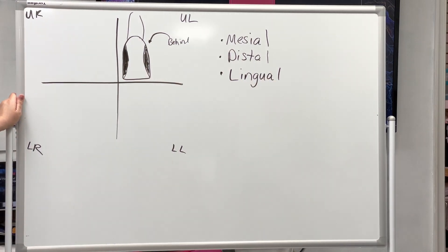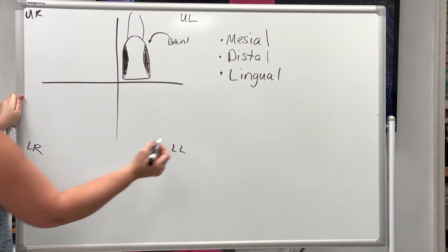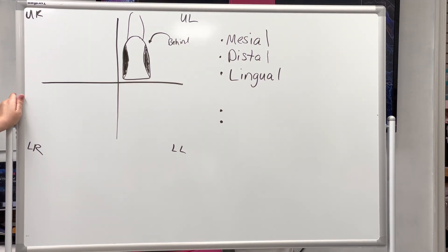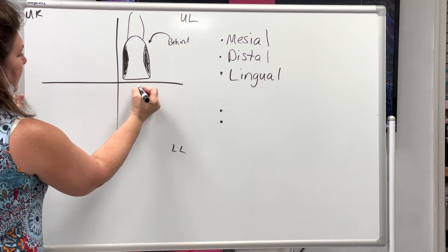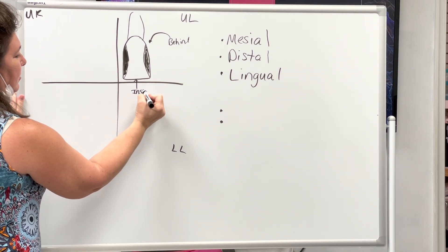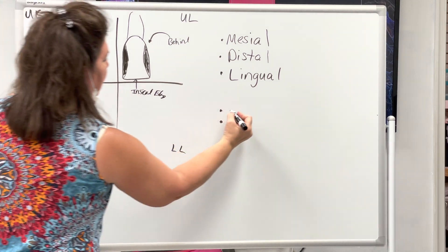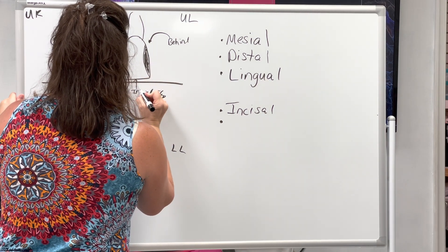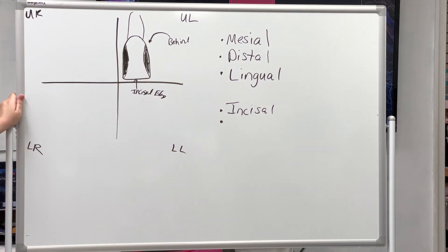Then we have two parts of the teeth that are different. The centrals, the laterals, the canines - those are all anterior teeth. You have this part here. That's the incisal edge. The incisal. And then the part that faces you is called the facial.